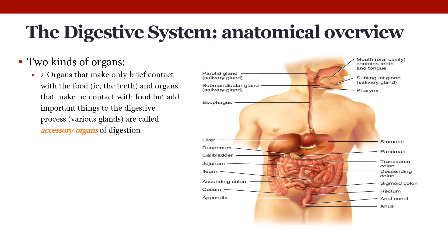The other types of organs in the digestive system are those that only make brief contact with food, or make no contact at all, but instead add important things to the digestive process — things essential to properly digesting our food. These are called the accessory organs of digestion, and include things like the liver, the pancreas, and other types of glands.